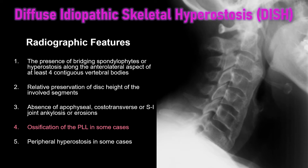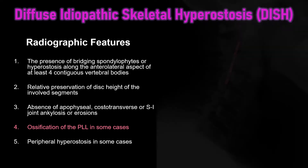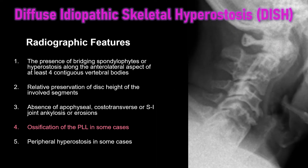In some cases of DISH there is ossification of the posterior longitudinal ligament, usually seen posterior to C2 to C5. If present, it can cause canal stenosis or other neurologic complications. It's not always present but something to look for. Here is an example of ossification of the posterior longitudinal ligament seen posterior to C2–C3.